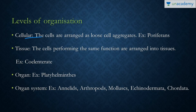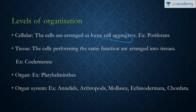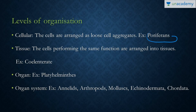The basic level of organization in multicellular organisms is the cellular level of organization. This means the cells are arranged in loose aggregates — tissues are not formed. Cells are the structures which help in the structural and functional being of the organism. The example of this is Porifera, which basically includes all the sponges, commonly known as sponges.